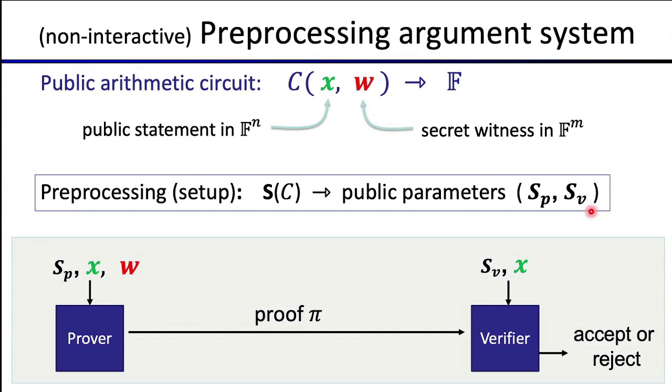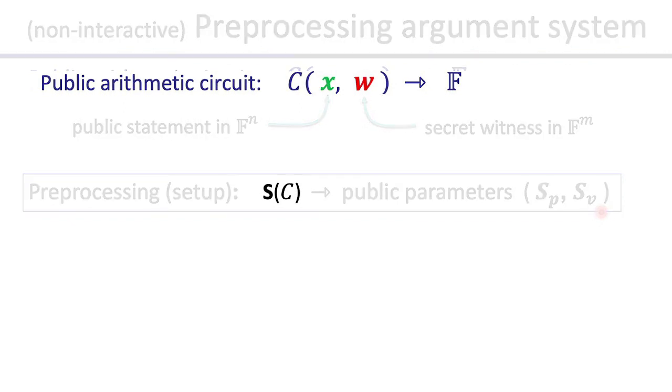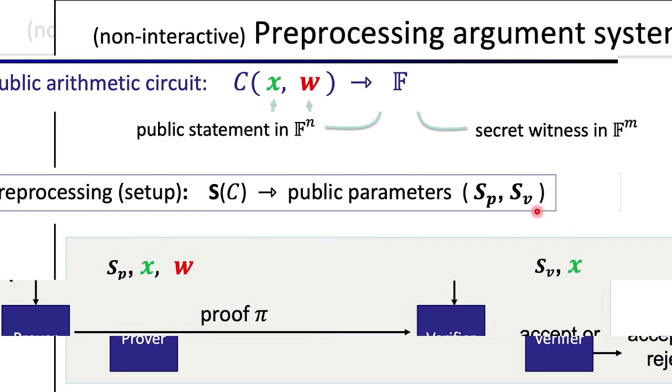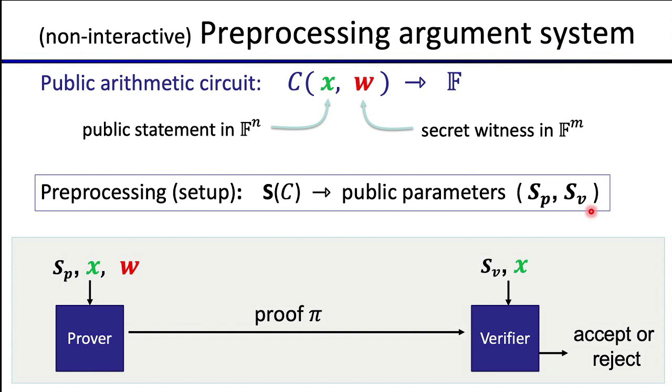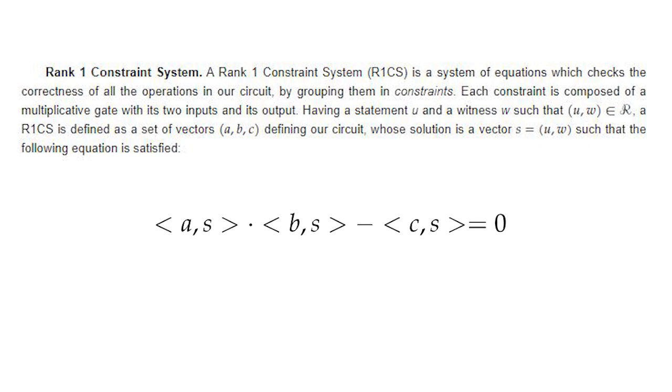As we saw earlier, in the pre-processing stage, both public parameters sp and sv are derived from a public arithmetic circuit c. Simply put, Groth16 relies on a trusted setup for the arithmetic circuit which forms our polynomials and where both the public parameters s are derived from. The arithmetic circuit is used to form a rank one constraint system (R1CS), which is a system of equations which checks the correctness of all the operations in our circuit.